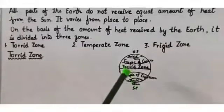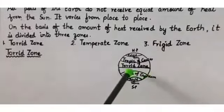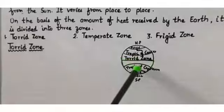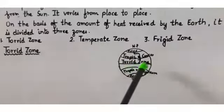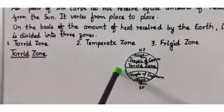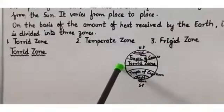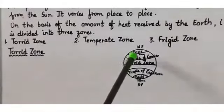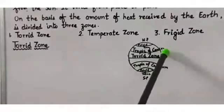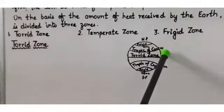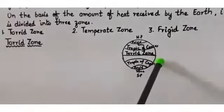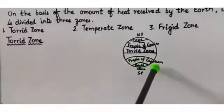As you know, the great circle that divides the Earth into the northern hemisphere and southern hemisphere is the equator, which we studied in the previous lesson. It is at zero degrees latitude. The line of latitude at 23 degrees 30 minutes north is called the Tropic of Cancer, and the line at 23 degrees 30 minutes south is the Tropic of Capricorn.